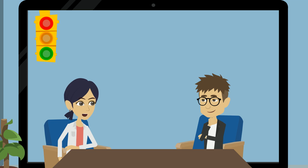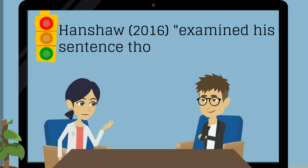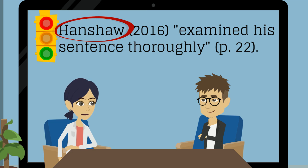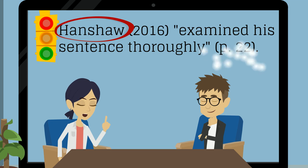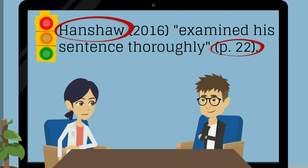You should also know about signal phrases. This is when you use the author or author's names in the sentence text. This covers the author portion of the citation, making the author's name unnecessary in the end-of-sentence citation parentheses, although other information may still need to be listed there.